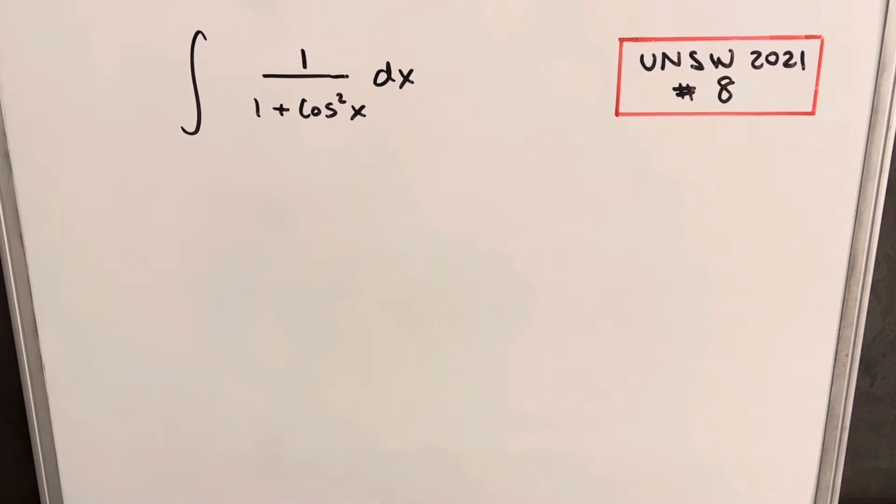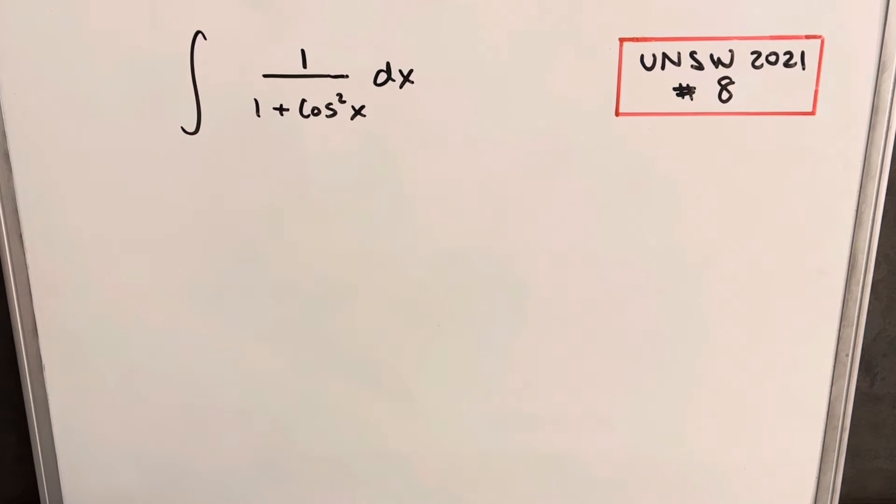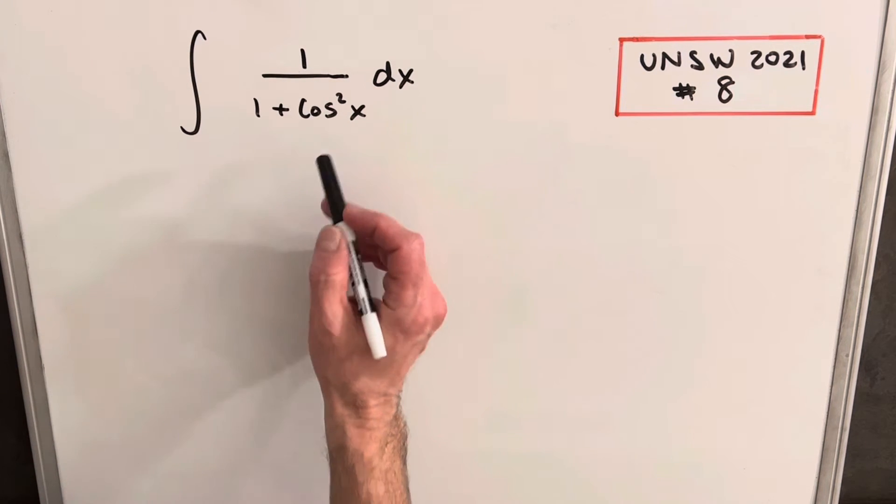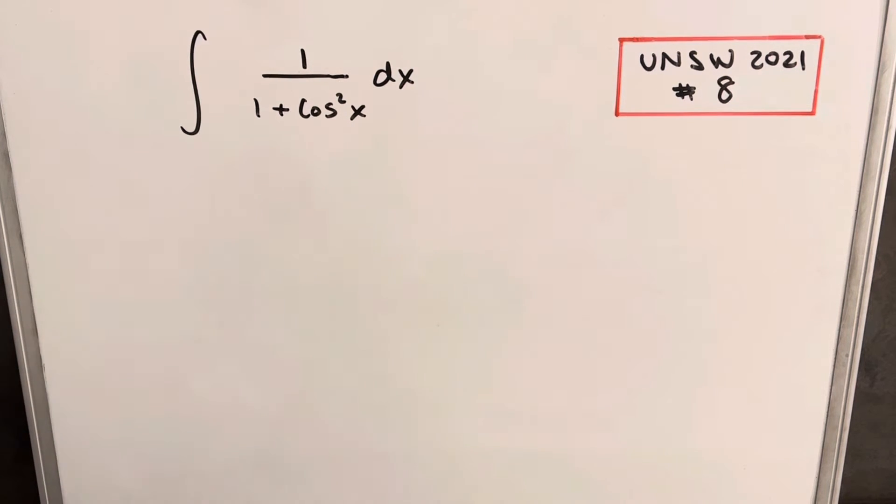The first thing I want to try is I'm looking for a u substitution. I'd really like maybe a sine in the numerator or even something I can work with in the numerator, but there's nothing there. Nothing was really standing out for me. So what I was thinking of doing was if we could transform this by dividing through by cosine squared, let's see what happens.